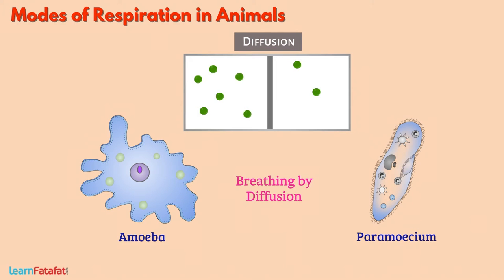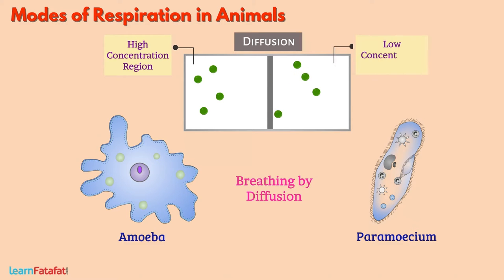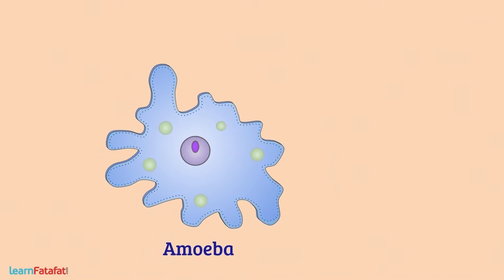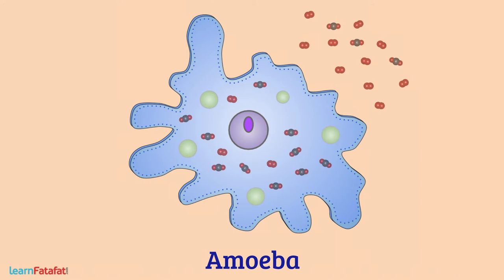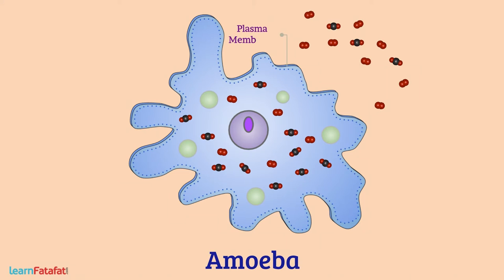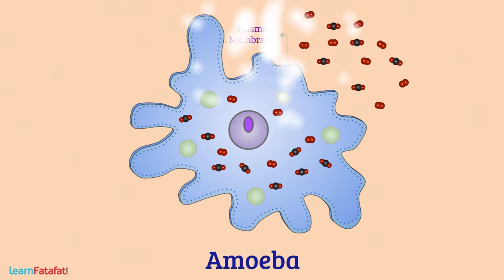Diffusion is a process in which molecules move from a region of higher concentration to a region of lower concentration through a semi-permeable membrane. As the concentration of oxygen is higher outside the cell than inside, oxygen gets diffused from outside to inside of the cell through the plasma membrane. Similarly, as the concentration of carbon dioxide is higher inside the cell than outside, it gets diffused from the cell body to outside through the plasma membrane.